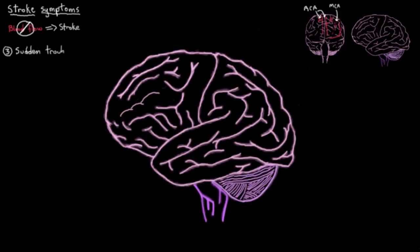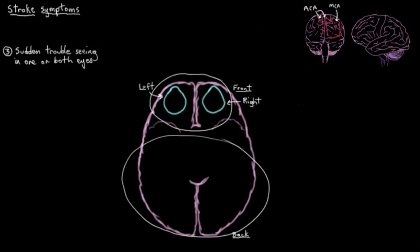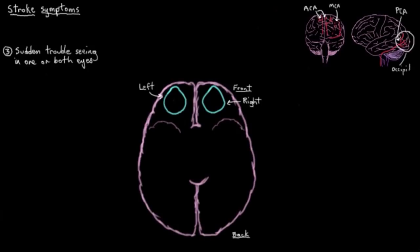So next up, we have sudden trouble seeing in one or both eyes. And here's a top-down view of the brain to help us understand this. So up here is the front, and back here is the back, and this is the left eye, and this is the right eye. So there's really two sort of overarching parts to proper vision. You need a healthy set of eyes to bring in the visual information, and you need a healthy brain to process and interpret that information. So if you add some stroke-related damage to one of the parts of the brain that manage your vision, let's say you had a blockage in your posterior cerebral artery, your PCA, which supplies your occipital lobe. That's the major lobe that allows you to have vision. You could actually end up with some vision loss.